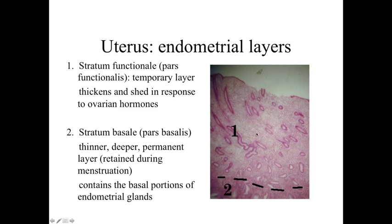Within each uterine or ovarian cycle, changes occur within the endometrium. There are two regions: the superficial stratum functionalis, which is a temporary layer that thickens or is shed in response to ovarian hormones, and the deeper stratum basalis, which is a thinner, more densely packed layer containing the basal portions of the glands. While the stratum functionalis is lost at the end of each uterine cycle, the stratum basalis is maintained and regenerates the stratum functionalis for the next cycle.